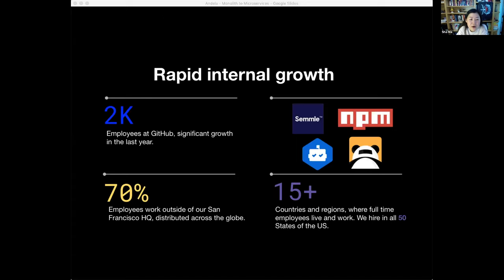Internally at GitHub, we also went through a significant growth phase in the last 18 months. Now with over 2000 employees, we have more than doubled the number of engineers contributing to our code base. We've grown both organically and through acquisitions such as Semel, NPM, Dependabot, and Poolpanda. Additionally, GitHub is a highly distributed team, just like Indela. We have over 70% of our employees working outside of our San Francisco headquarters, and this was prior to the pandemic. GitHub employees and contractors collaborate across six continents working in all time zones.